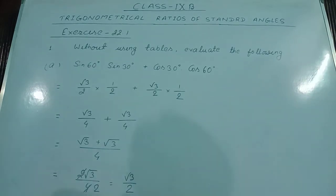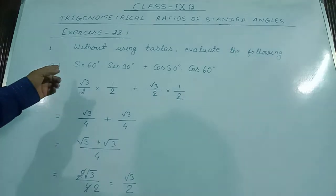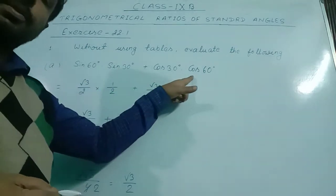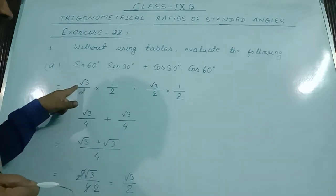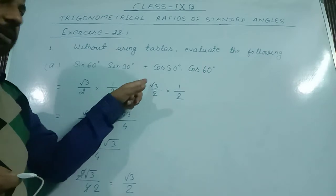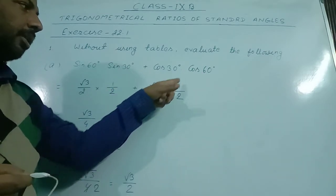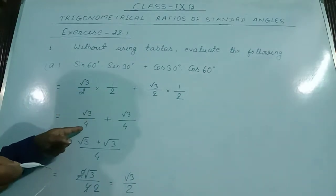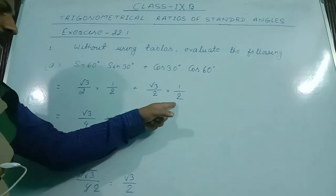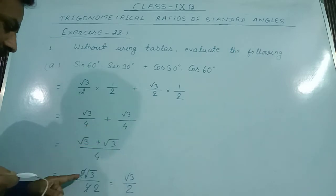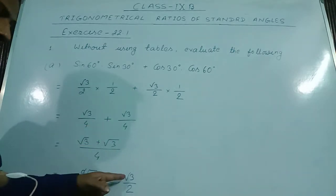Let us start Exercise 22.1. Question 1a: evaluate sin 60° × sin 30° + cos 30° × cos 60°. Substituting values: (√3/2)(1/2) + (√3/2)(1/2) = √3/4 + √3/4. Taking LCM as 4: (√3 + √3)/4 = 2√3/4 = √3/2. The answer is √3/2.